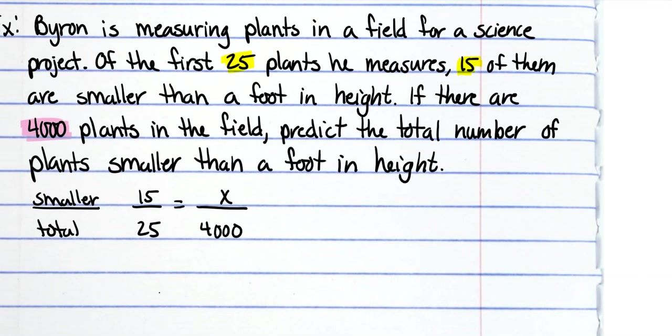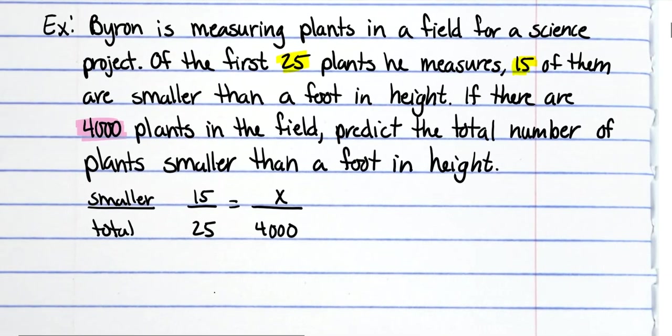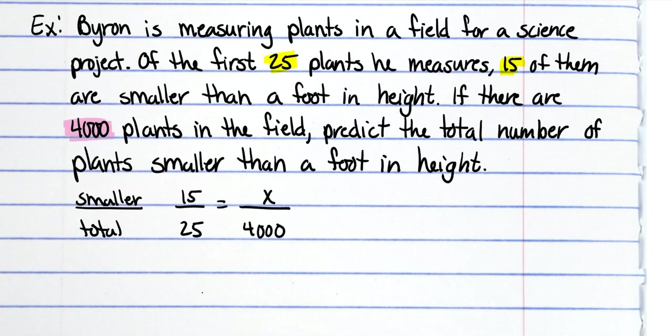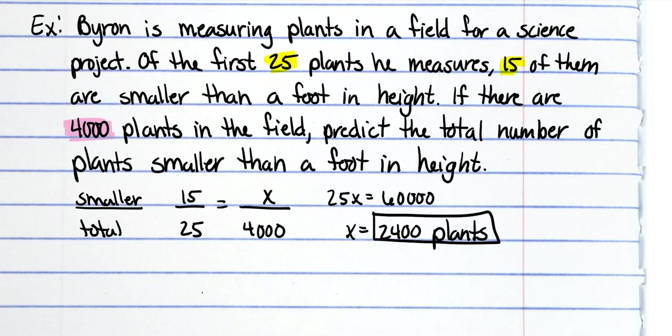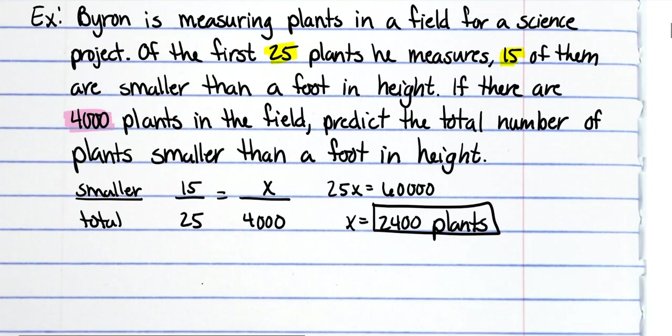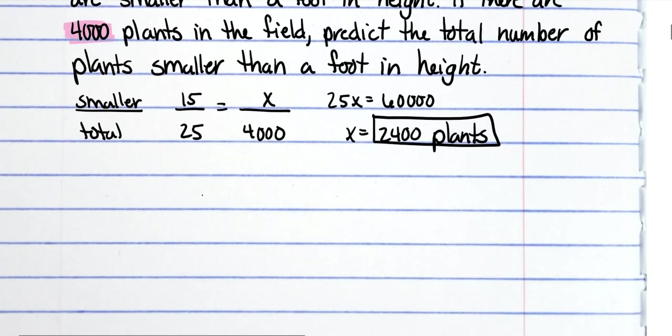Now you cross multiply. 25 times x is 25x and 15 times 4,000 is 60,000. Divide 25 on both sides and x is 2,400 plants. Anytime that you have a word problem, you must write the subject of that word problem, so make sure you do that. We have one more word problem.